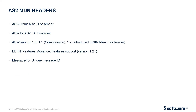These are AS2 MDN headers. AS2-From: AS2 ID of the sender. AS2-To: AS2 ID of the receiver. AS2-Version: 1.0, 1.1 or 1.2. EDI-INT-Features: advanced features support, version 1.2+. Message-ID: unique message ID.